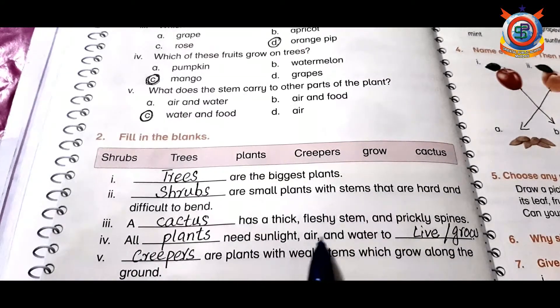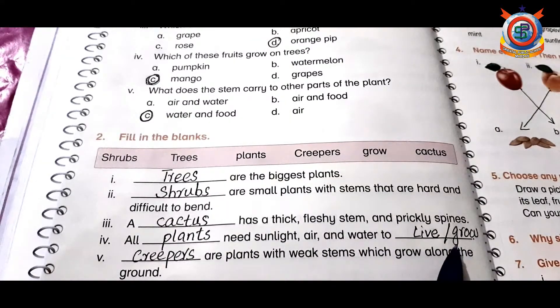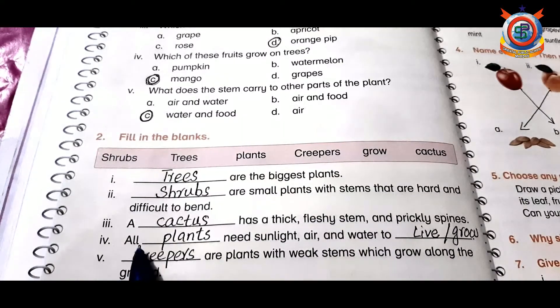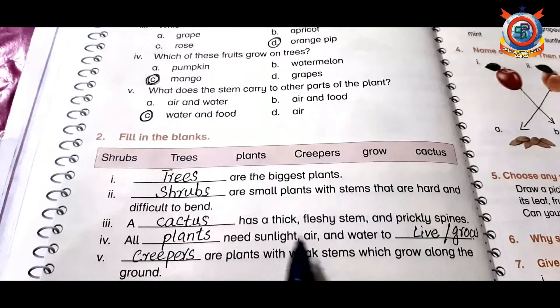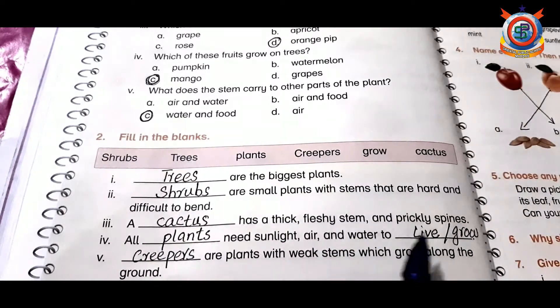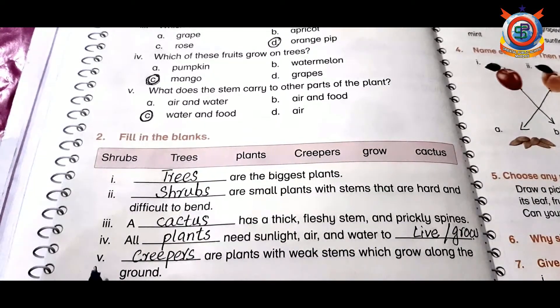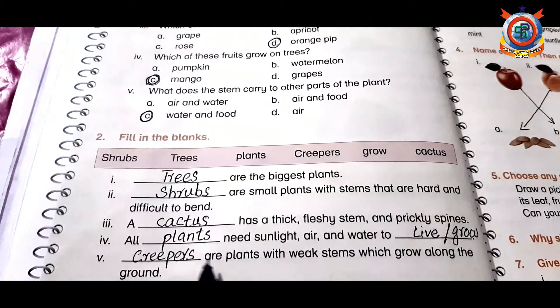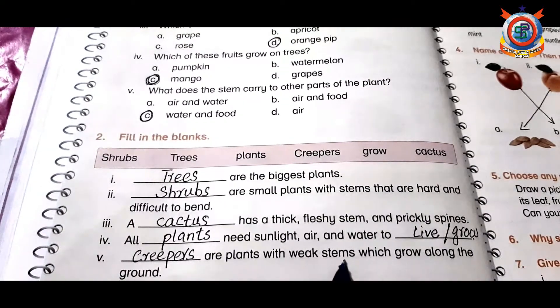If you write all plants need sunlight, air, and water to live, both are correct. Fifth one: creepers are plants with weak stems which grow along the ground.